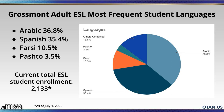This is a quick snapshot of one particular demographic of our students — the most frequent student languages. We have 36.8% native Arabic speakers, 35.4% Spanish, 10.5% Farsi, 3.5% Pashtun, and 13.5% other languages combined. We have translators in our program — one who speaks both Farsi and Pashtun, a Spanish translator, and we're searching for an Arabic translator. Since July 1st, we've enrolled 2,133 students in our program.